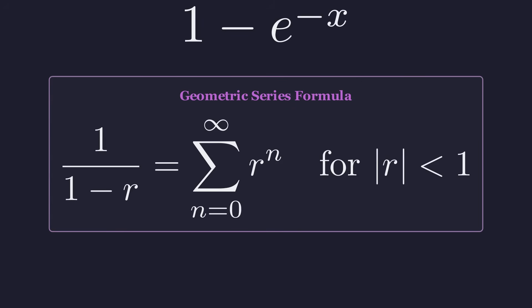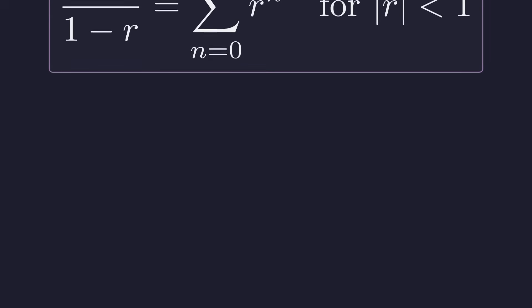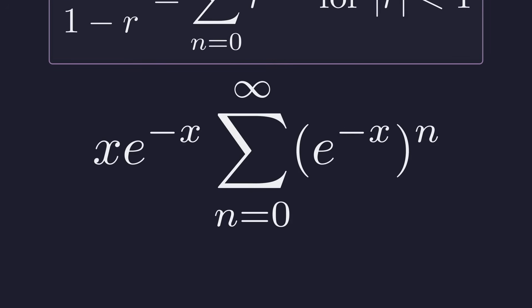Since we're integrating from 0 to infinity, x is always positive, which means e to the negative x is always between 0 and 1. Perfect. So we can replace that fraction with the series.